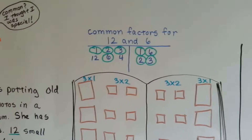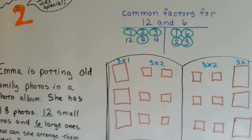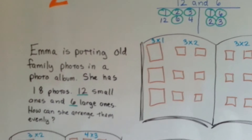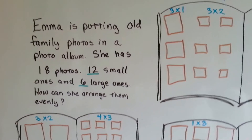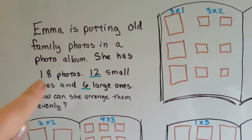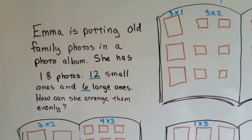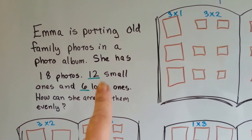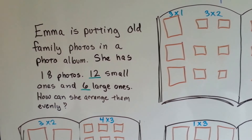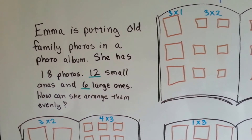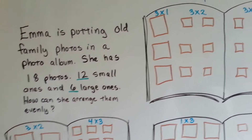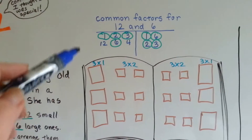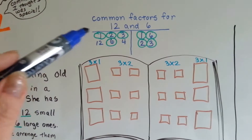Let's take a look at what Emma's doing. Emma's putting old family photos in a photo album. She has 18 photos altogether — 12 small ones and 6 large ones. How can she arrange them evenly? We need to find the common factors for 12 and 6.